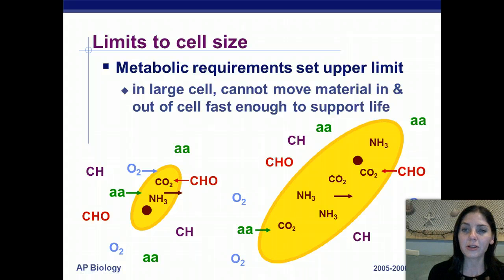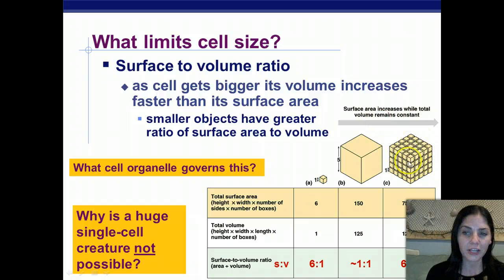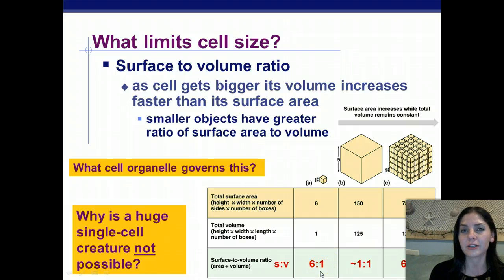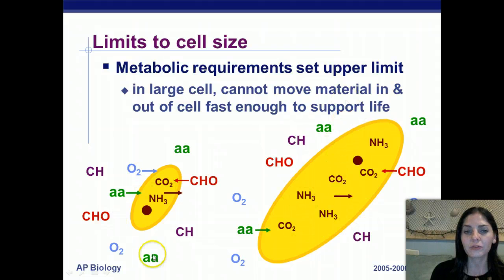Metabolic requirements set the upper limit for cell size. In a large cell, we cannot move material into and out of the cell fast enough to support life. However, a large cube made of smaller subunits allows materials to communicate and diffuse into and out of each smaller cell and cross into the next one. A larger cell will take much longer for different materials to diffuse into and out of it than a smaller cell.